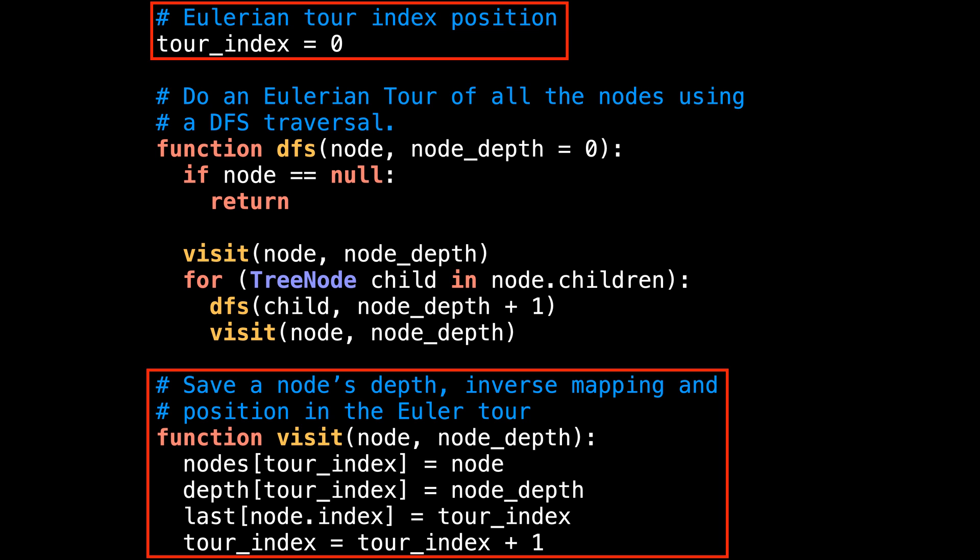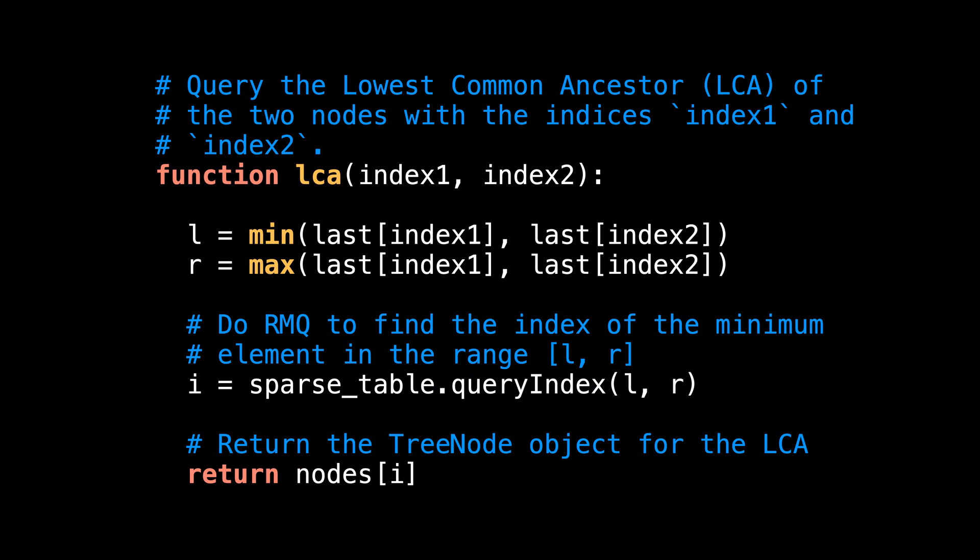The visit function is responsible for populating the arrays associated with the Eulerian tour each time we visit a node. In particular, this function will update the nodes array to keep track of the pointer to the current node, it will also update the depth array to track the current depth, and it will also update the inverse mapping to the Eulerian tour index. Alright,